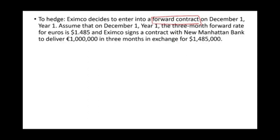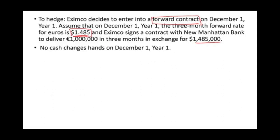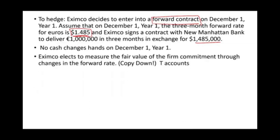On December 1st, the three-month forward rate is 1.485. So we bought a forward contract — once we receive the euros, we can sell them at 1.485, meaning we can get $1,485,000 from this transaction regardless of what the euro rate is on that date. There's no cash change on December 1st. We elected to use the fair value method, measuring changes in the firm commitment through changes in the forward rate.